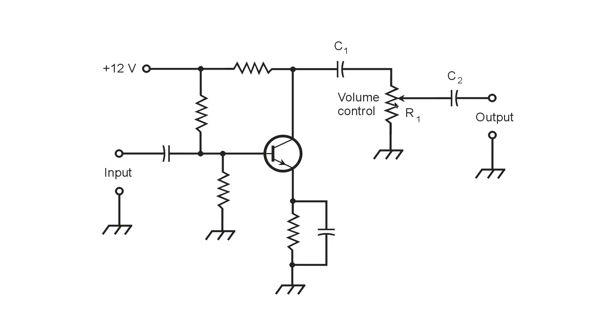You should use an audio taper potentiometer for this purpose, so that the volume control will appear to increase and decrease the volume in a smooth manner. If you use a linear taper potentiometer, you will seem to get all of the volume crammed at one end or the other of the potentiometer.